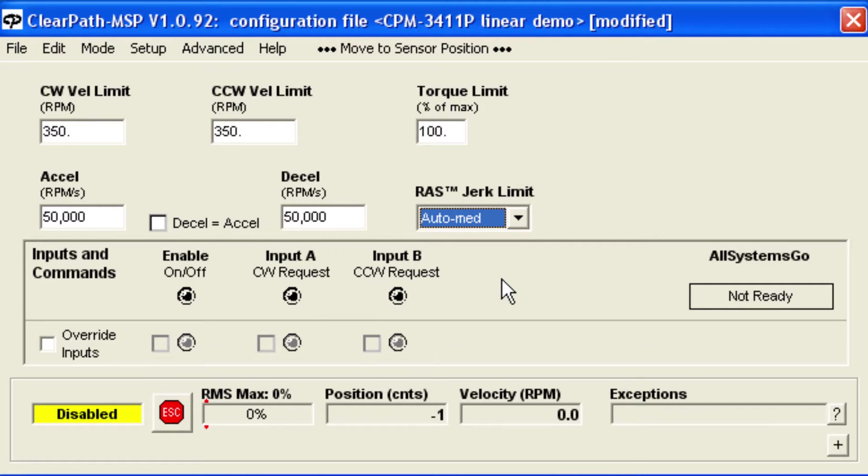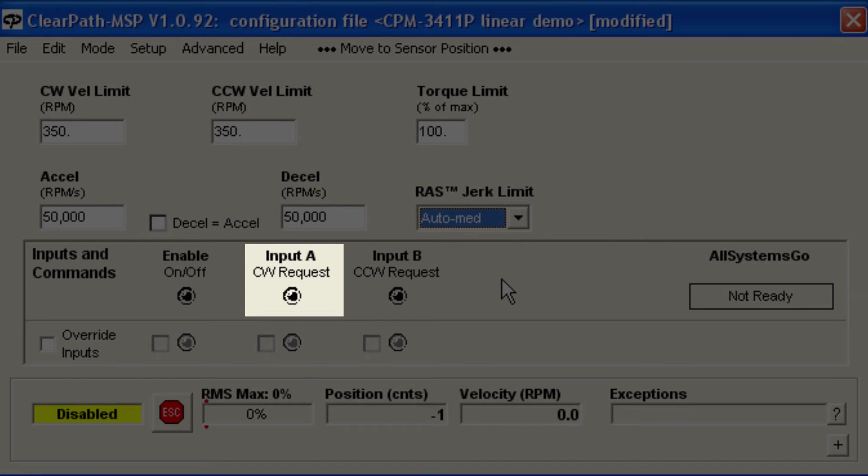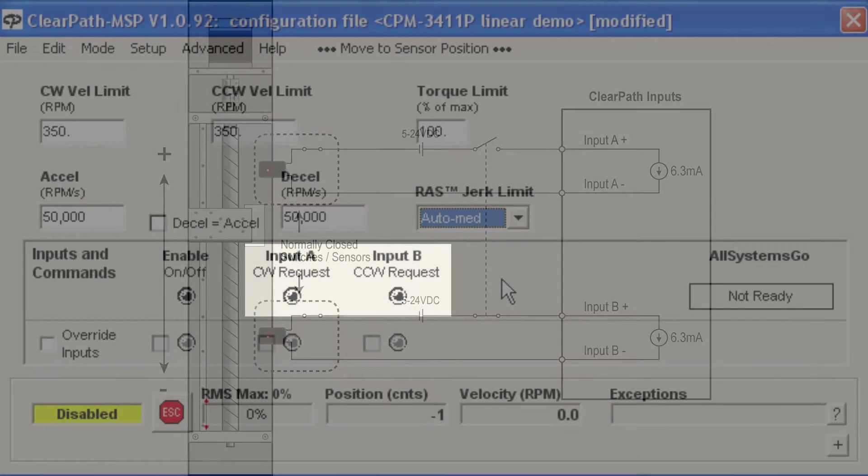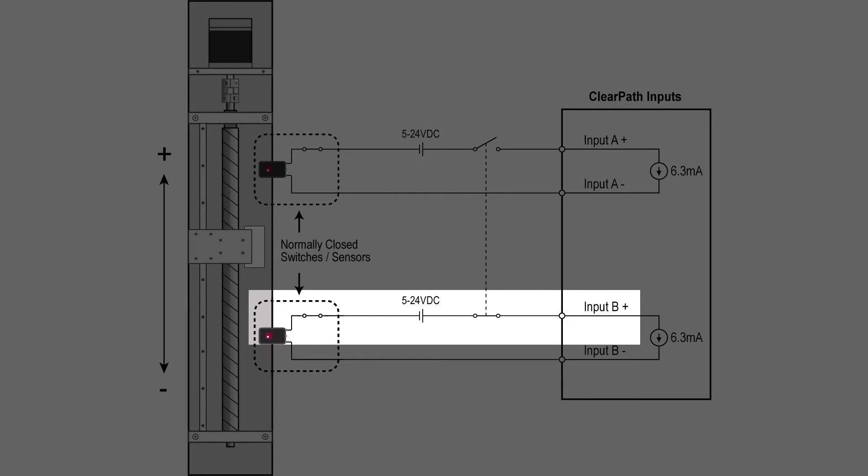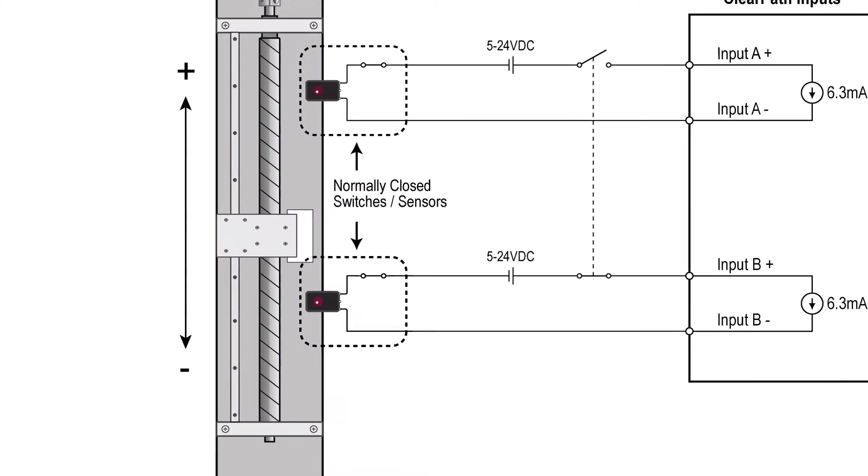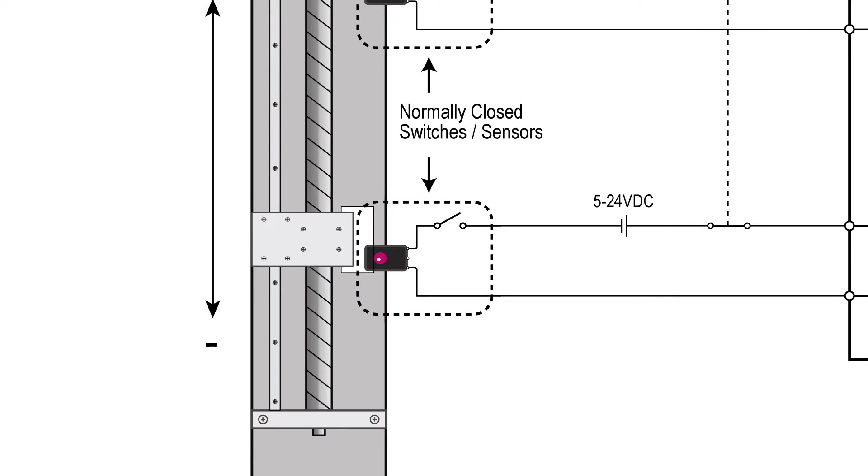Turning on ClearPath's A input requests clockwise motion, and likewise, the B input requests counterclockwise motion. In this mode, you wire your position sensors in series with your A and B signals. This way, when you hit a sensor, the input signal will be interrupted, causing the axis to smoothly ramp to a stop.